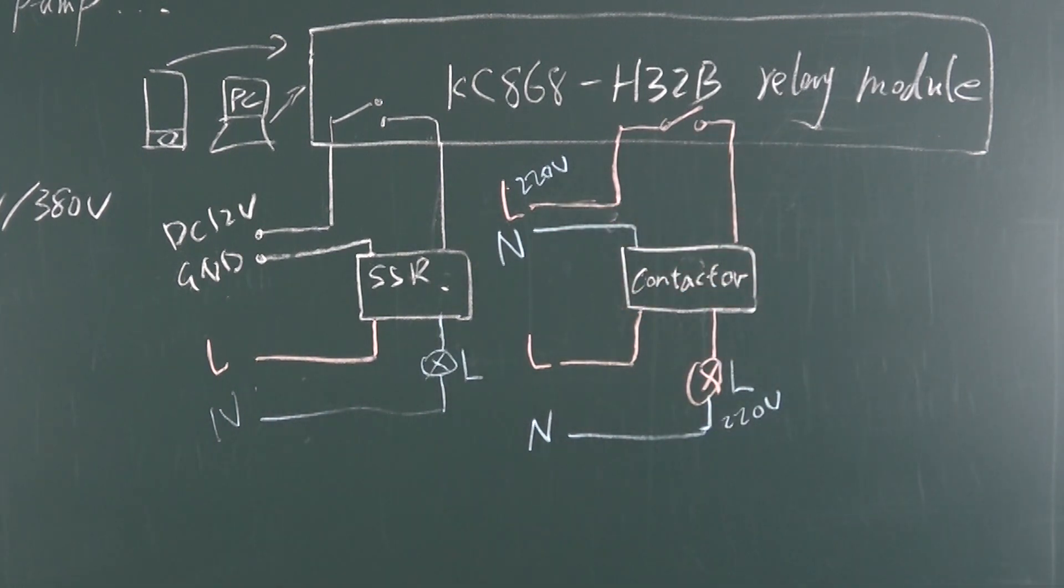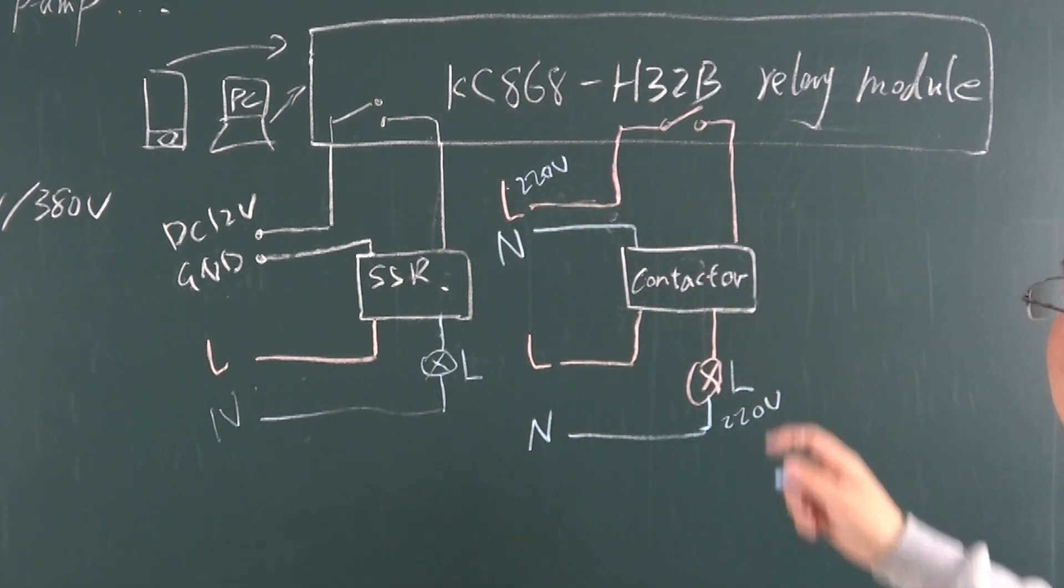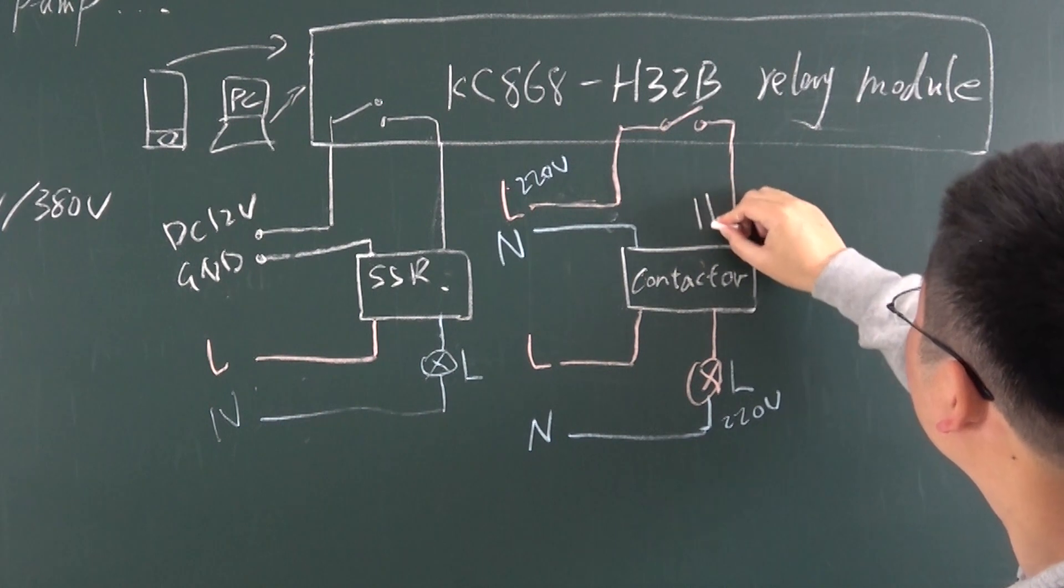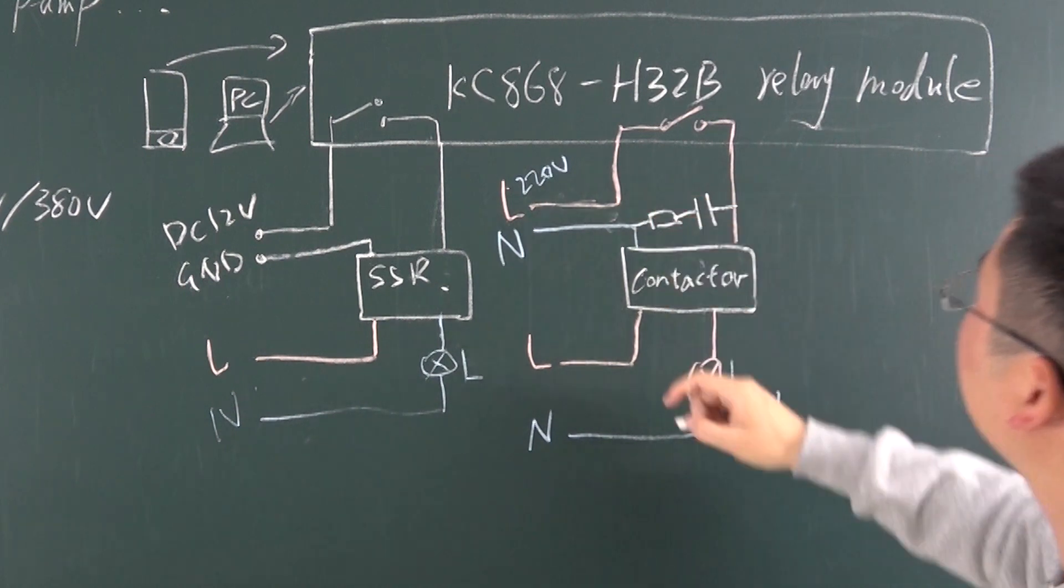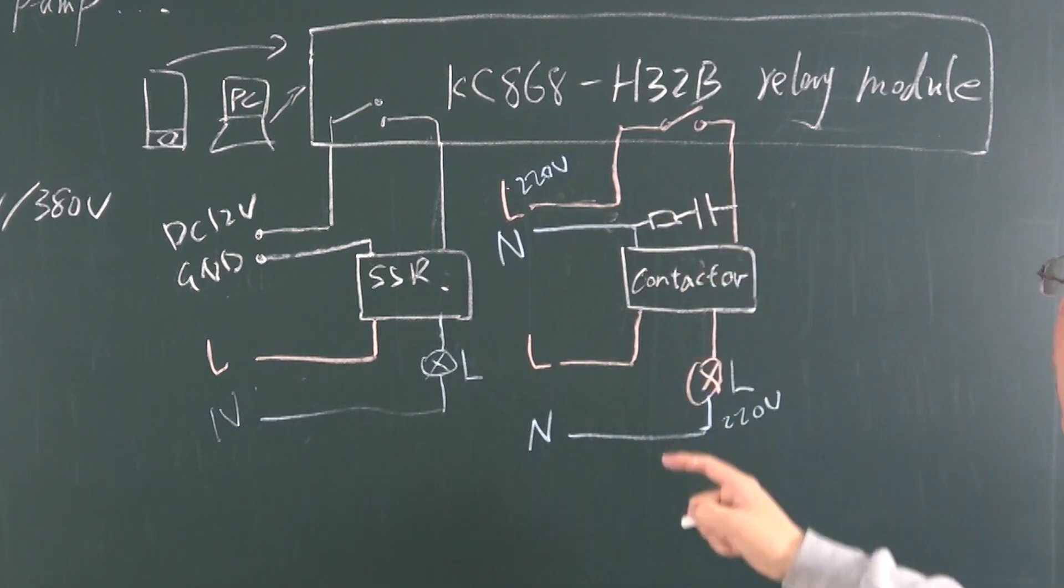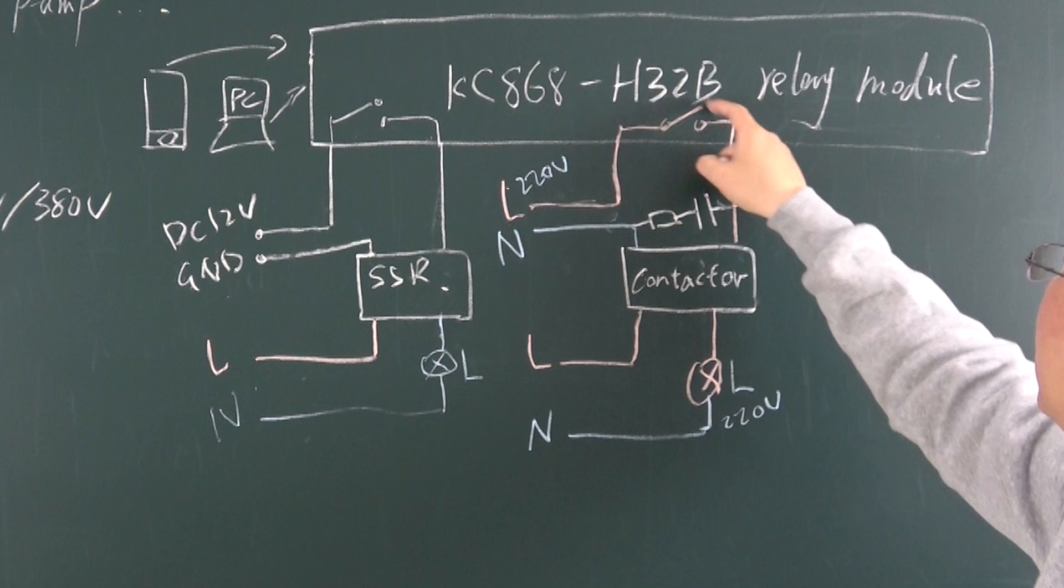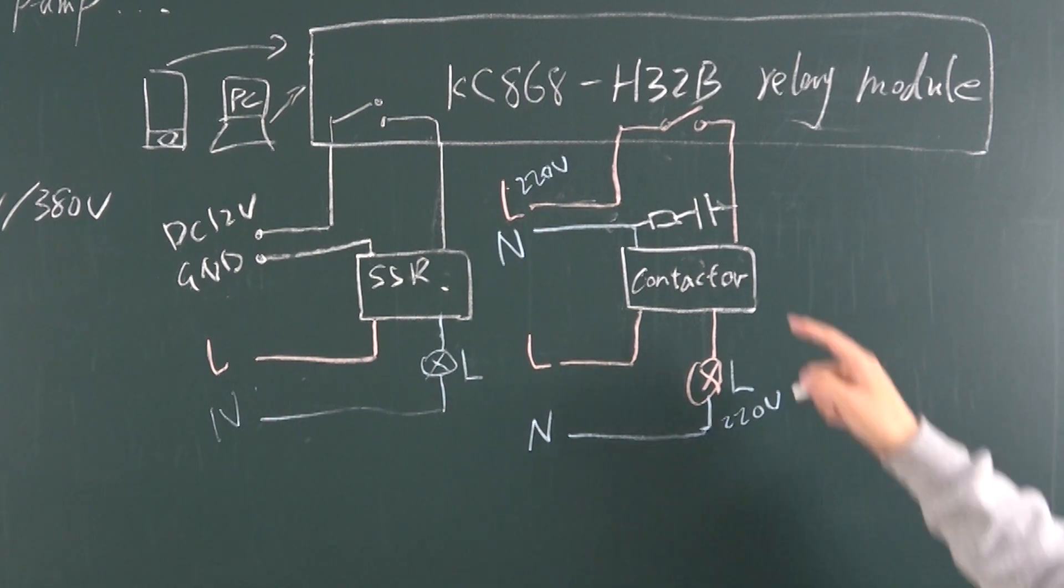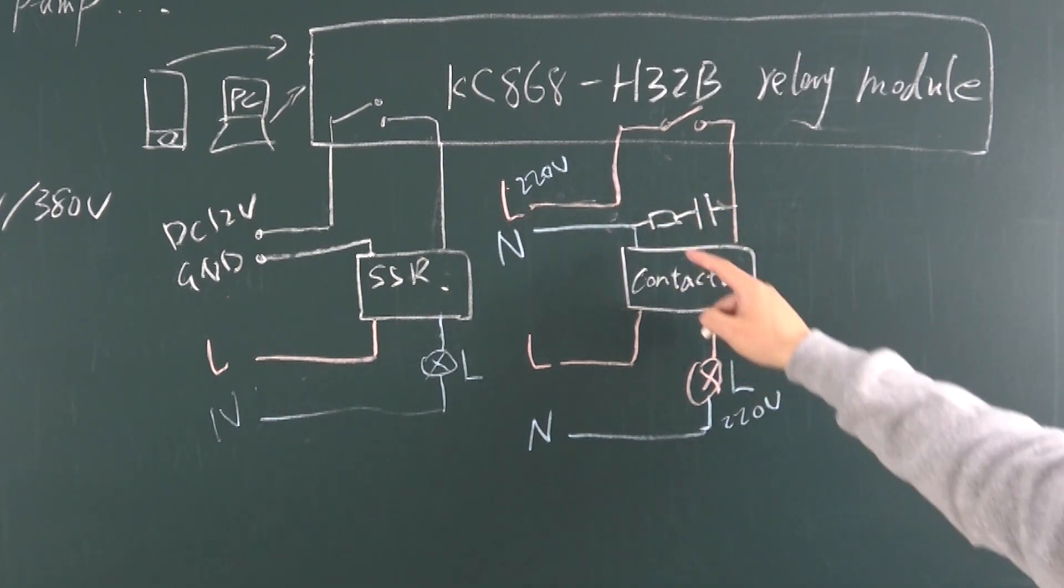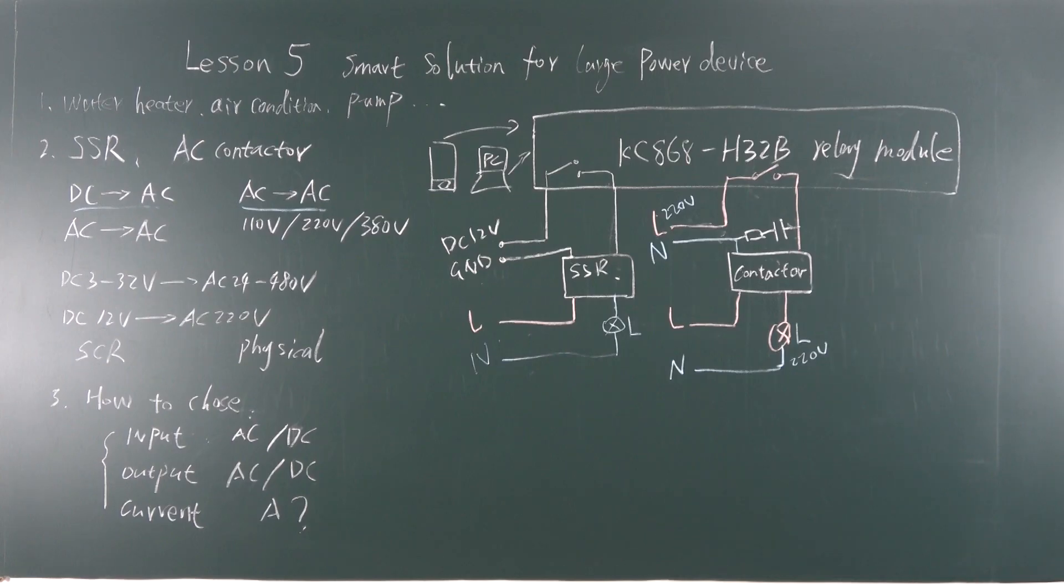But if you use the AC contactor for the 220. Maybe have some interference. So we can add a RC circuit. To anti the interference. Give this two points. This will protect the relay. And let the relay can use for many years. Improvement for the relay. Okay. So this can add. Or this not add. But this. If you add. It will be good for the relay.